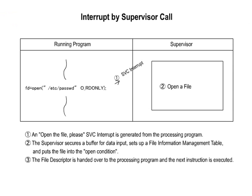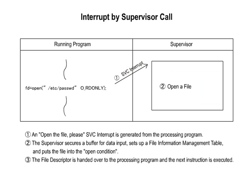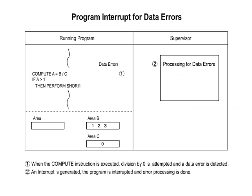2. Internal Interrupts. A. Supervisor Call Interrupt: The interrupt notified to the supervisor when the processing program wants to use an OS function such as loading a program or reading a program. This is called the supervisor call interrupt, also known as a system call. The instruction used at this time is called the supervisor call instruction, or SVC instruction. This instruction can be used to generate an interrupt. The supervisor call instruction is directly executed from a running program or indirectly through a standard library routine, a group of often-used programs.